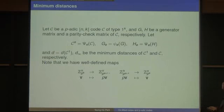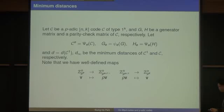Let C be a p-adic (N,K) code of type 1^K, with G the generator matrix and H the parity-check matrix. C_e, G_e, H_e will be the code and the generator and parity-check matrix of the reduction modulo p^e. D will denote the minimum distance of C_1, in other words C mod p. And D_infinity will be the minimum distance of the p-adic code C.